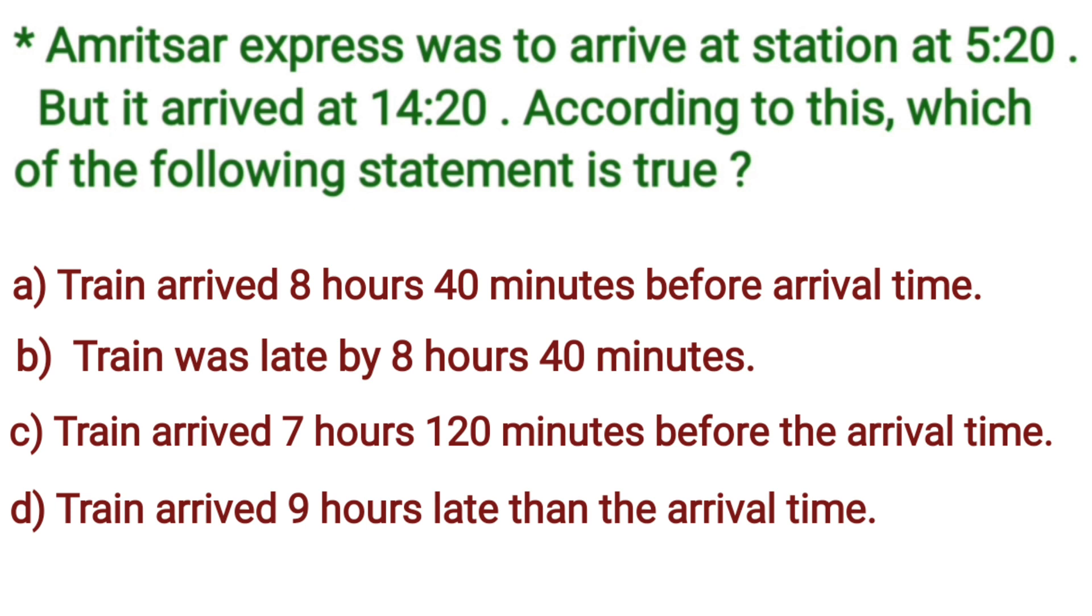Now, the next question is, Amritsar Express was to arrive at station at 5:20. But, it arrived at 14:20. According to this, which of the following statements is true? The train arrives at station at 5:20. But, it arrived at 14:20. First of all, we will calculate the time it has taken. That is, 5:20 to 14:20. That becomes 2:20 PM.